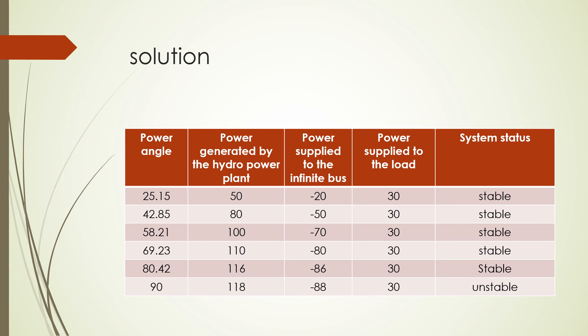The system is stable up to a power of 116 megawatt. After that, at the angle of 90 degrees, the system reaches an unstable state. According to the power angle curve, the maximum power that any generator can generate and supply to the infinite bus is up to 90 degrees. This concludes that 90 degrees is the steady state stability limit: below 90 degrees the system is stable, and above 90 degrees the system becomes unstable.